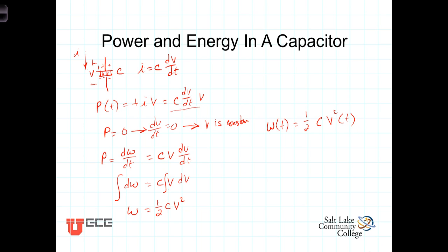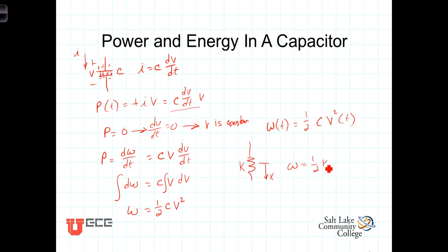This form of the equation is reminiscent of an energy formula from mechanics. For a spring displaced a distance x from equilibrium with spring constant k, the energy is one-half k x squared. A compressed spring has a potential energy, and similarly a charged capacitor has a potential energy — stored in the separation of charge.